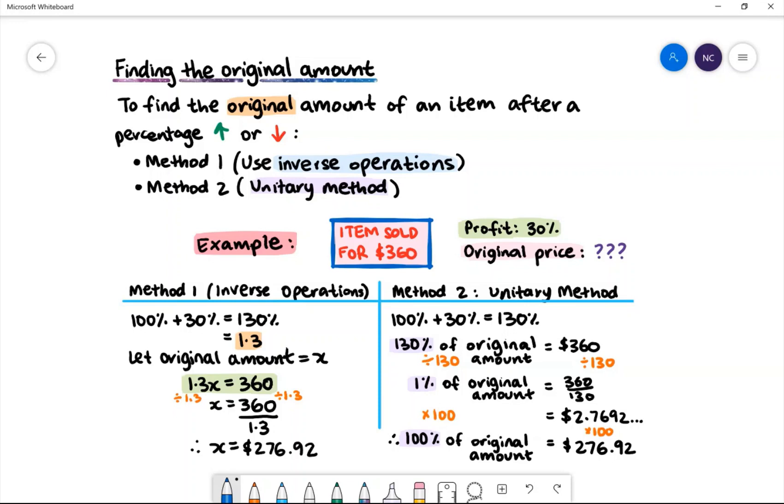For example, an item was sold for $360. The profit made was 30% and we want to find the original price of the item. In method one, inverse operations, we have 100% plus 30% equals 130%. Converting this to a decimal gives us 1.3.